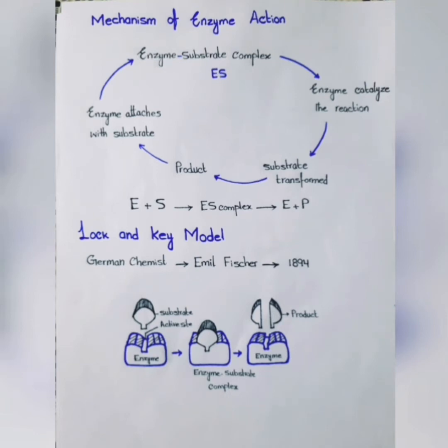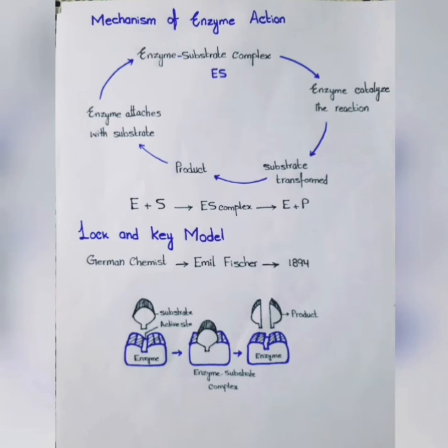Now we are going to discuss the models which help explain enzyme action. If the enzyme is attached with the substrate and the factors are at optimal levels — optimum temperature, optimum pH, and the substrate is at a specific concentration — then the enzyme can perform its function perfectly. Basically we will discuss two models for enzyme action. The first model is the lock and key model.